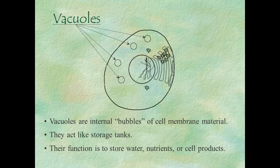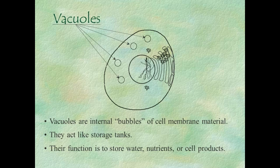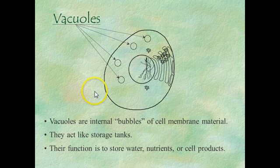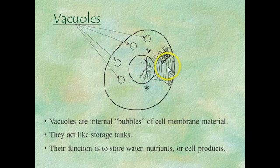Vacuoles may store water, nutrients, or cell products — usually proteins. Several organelles are made of this phospholipid bilayer material: the cell membrane, the nuclear membrane, the vacuoles, the Golgi, as well as the endoplasmic reticulum.